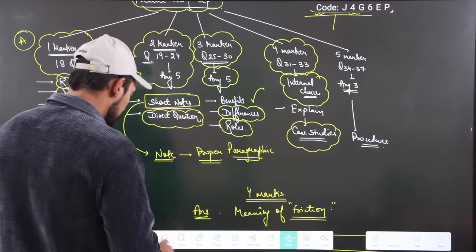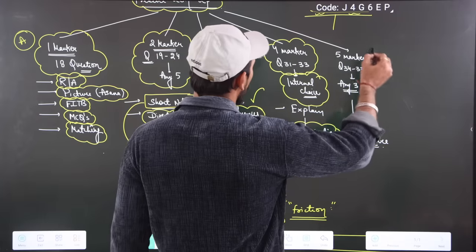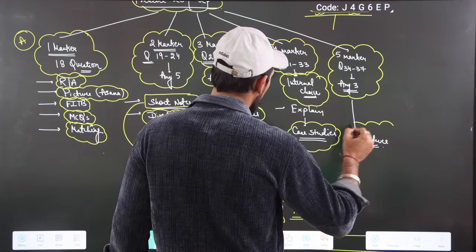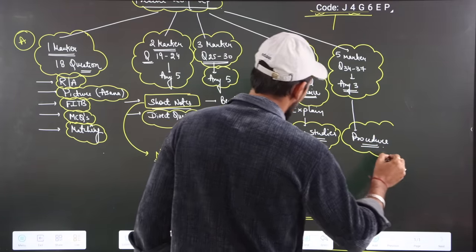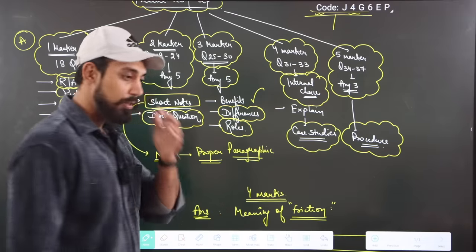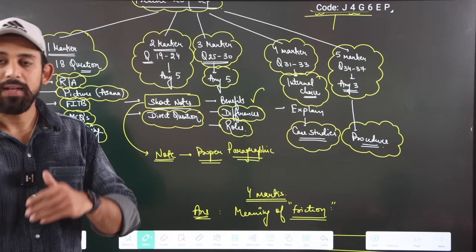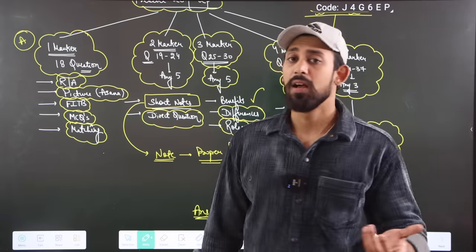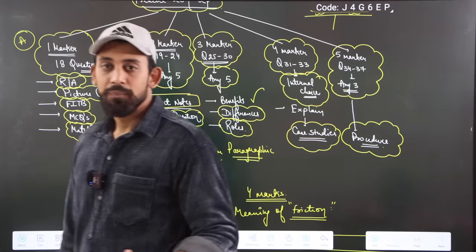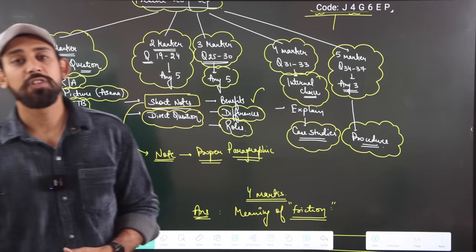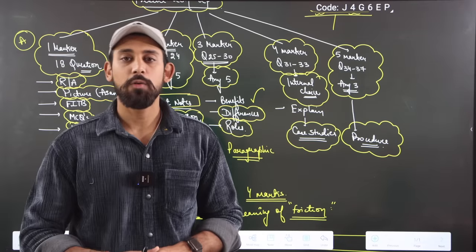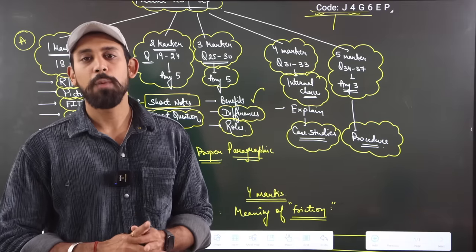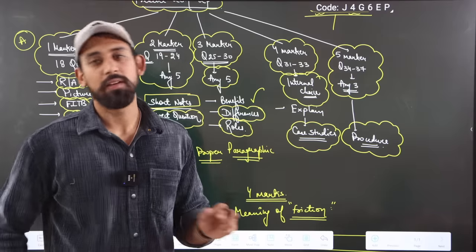For 5-mark questions, it is a big question. You can be asked to describe a procedure, or to discuss organizing a tournament — what the committees are and what their roles are. In a big question, you should know all the concepts in a very good way and explain them clearly.